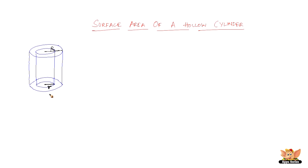From now on, whenever we use the term cylinder, it is understood that it's going to be a right circular cylinder. This topic is going to deal with the surface area of a hollow right circular cylinder. In our day-to-day activities we come across objects like water pipes, which are hollow. So the surface area of hollow pipes is not the same as a solid cylinder, because it has two surfaces — one outer and one inner.